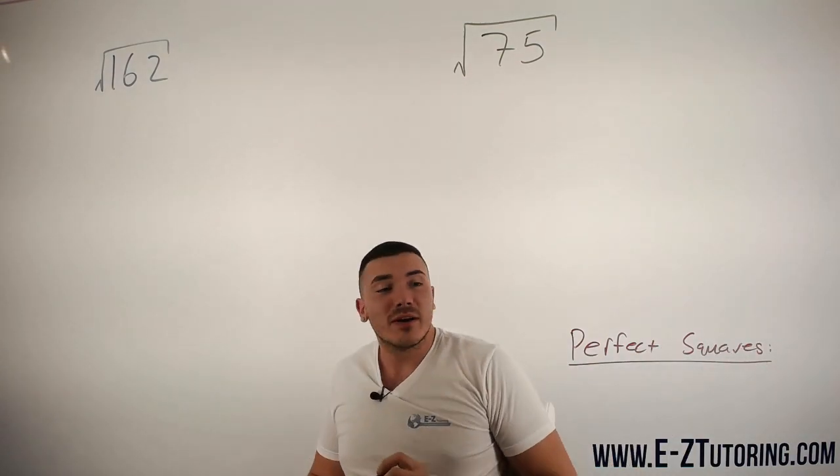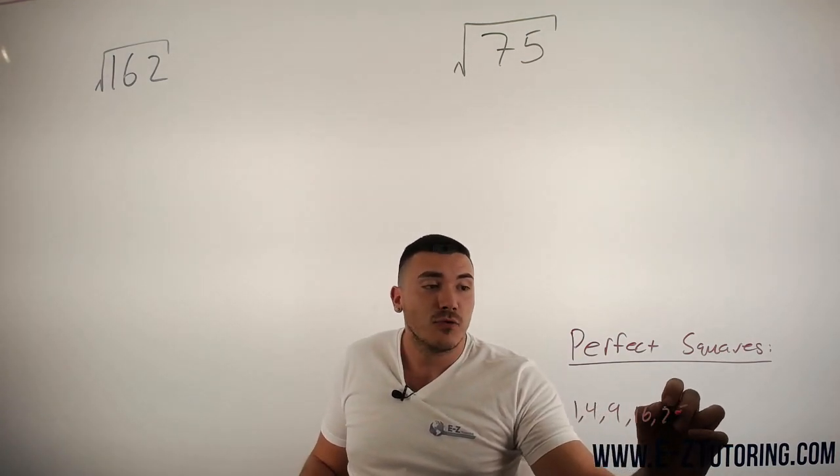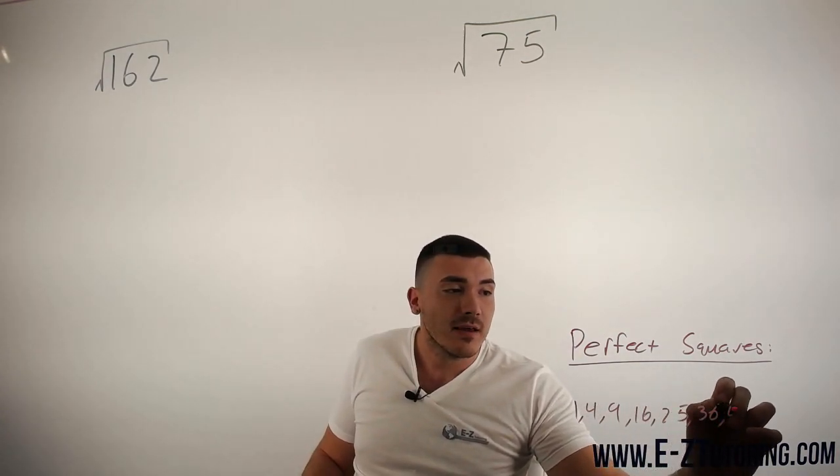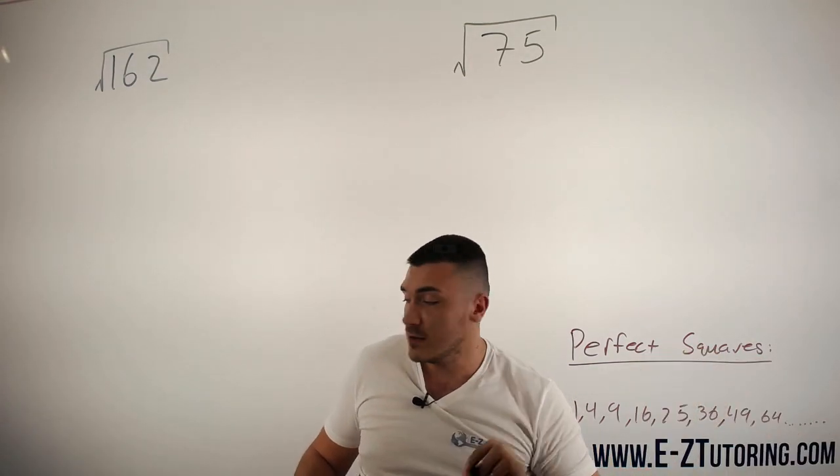Our perfect squares are 1, 4, 9, 16, 25, 36, 49, 64, so on and so forth.